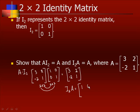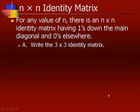You can also verify I₂A by computing [1, 0; 0, 1] times [3, -2; 2, 1] and confirming it equals the original A. For any value of N, there is an N by N identity matrix having 1's down the main diagonal and 0's elsewhere.